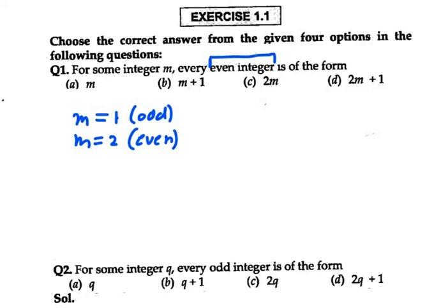So on, if you put m equals 3, it will be odd, m equals 4, it will be even, and so on. But we need even integer. It should be only even integer in this case. So therefore, option a is cancelled out here.